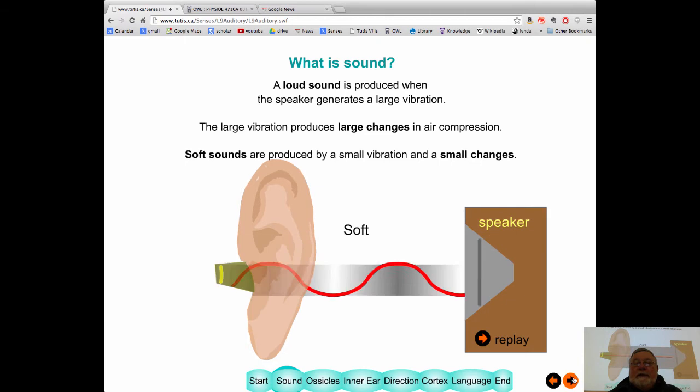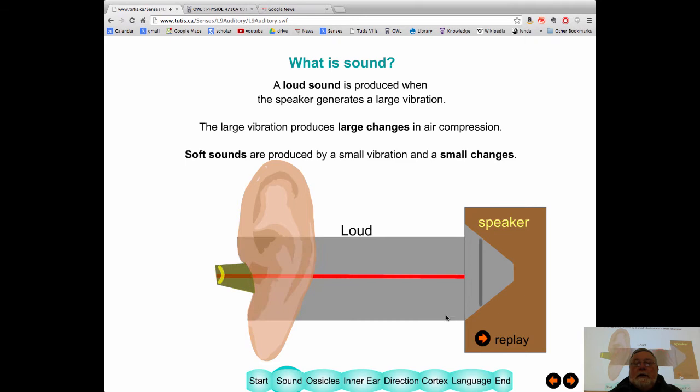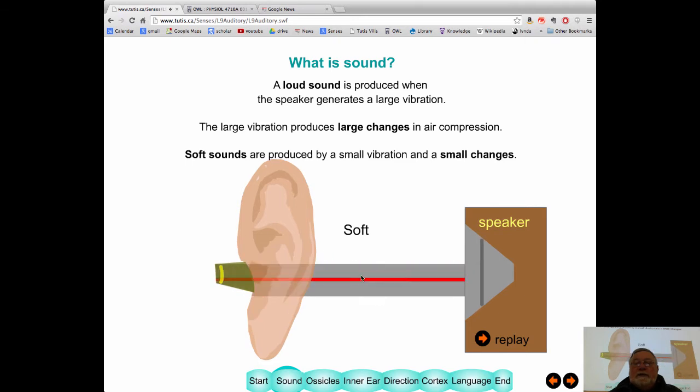Now, sound can be soft or loud. And the only difference between the two is the height, how much compression occurs. So, the compression waves are bigger or smaller. This speaker moves less or more. And in turn, this eardrum here has a bigger vibration or a smaller vibration.